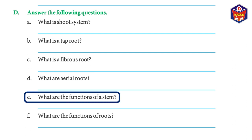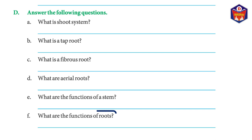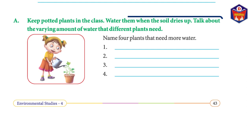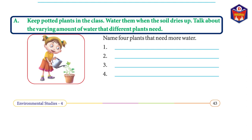Exercise D continued. (e) What are the functions of a stem? Answer: The stem transports water, minerals, and food to different parts of a plant. The stem keeps the plant straight and bears leaves, flowers, and fruits. (f) What are the functions of roots? Answer: Roots help the plant absorb water and minerals from the soil. They hold the plant firmly to the soil and help the plant stand straight.